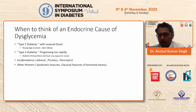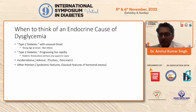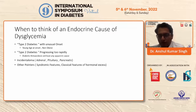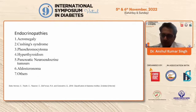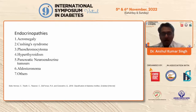There might be other pointers — some syndromic features, like in MEN1 we might have neuromas, or the classical features of hormonal excess like Cushingoid features or acromegaloid features. These might point towards a possible endocrinopathy. So these are the endocrinopathies we'll be discussing, and I'll discuss them through cases just to make it a little less boring.